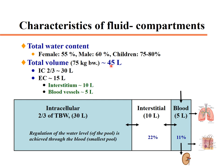Let's see how total water is distributed. A 75 kilogram patient has about 60%, so 45 liters of water. Two-thirds of this water is located in the intracellular spaces, while the other one-third is in the extracellular spaces.